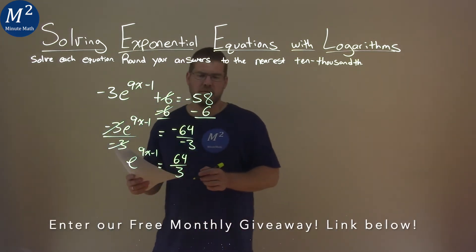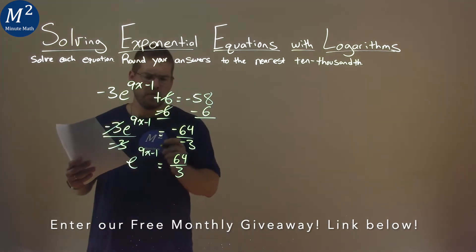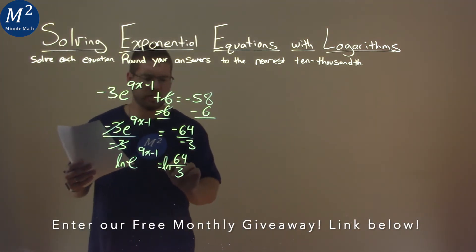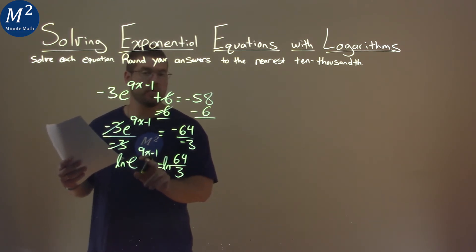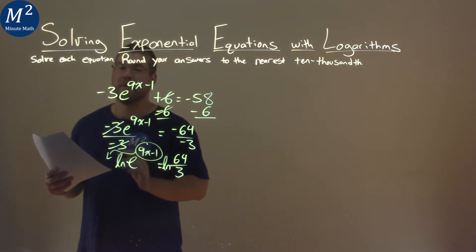I don't worry too much about simplifying this right now. From here, I know I can take the natural log of both sides of the equation. What it does here with this natural log of e to the exponent of 9x minus 1, I can take that exponent and put it out front.